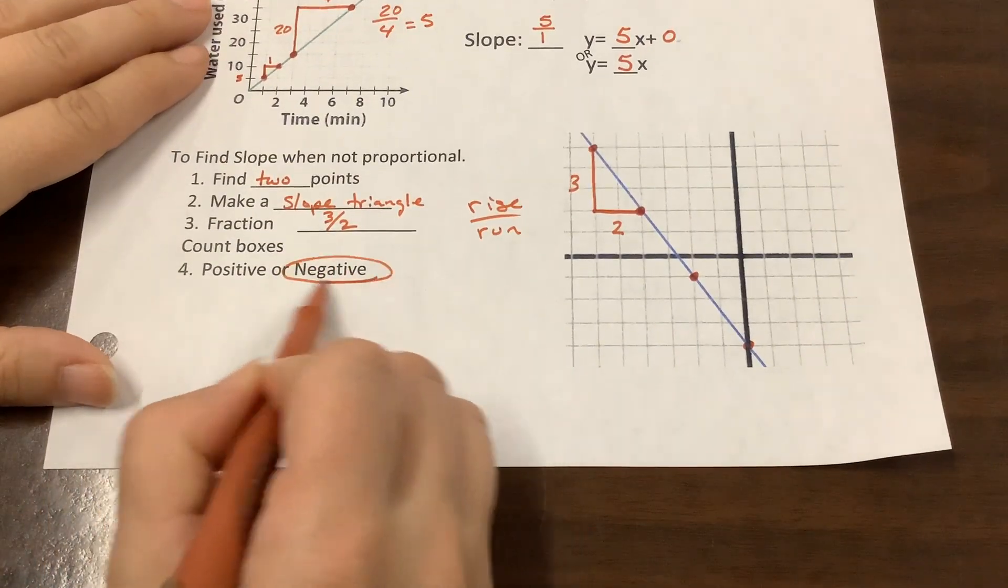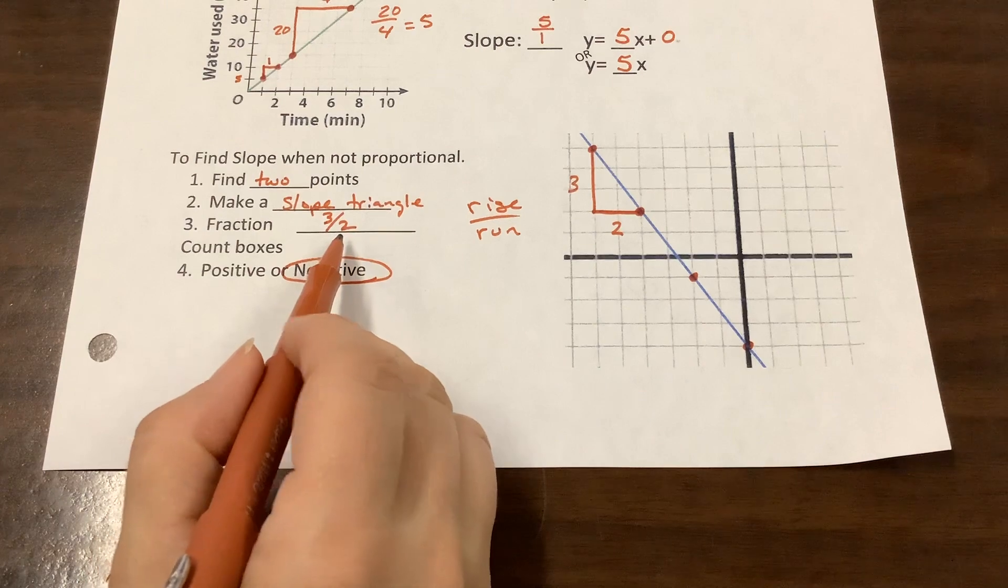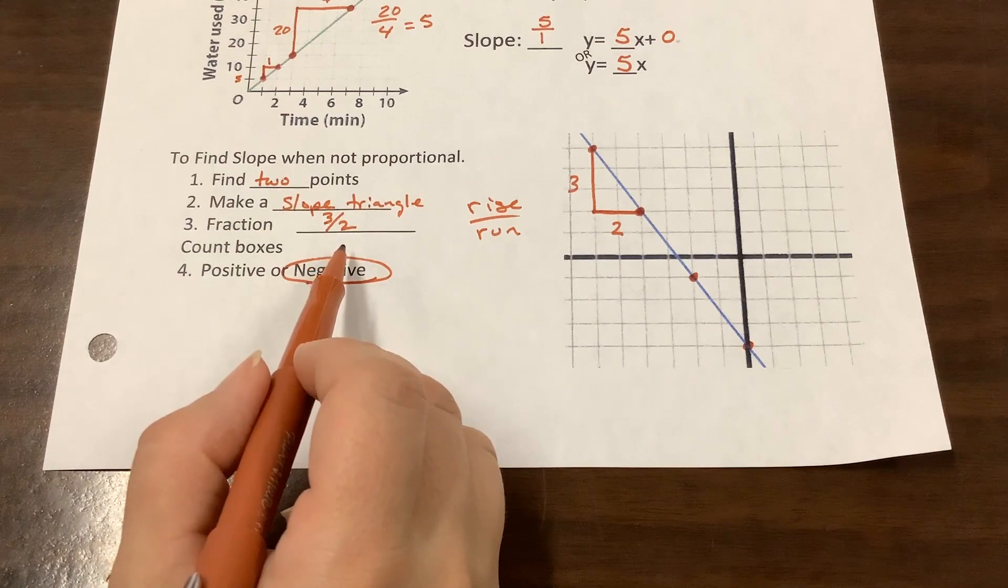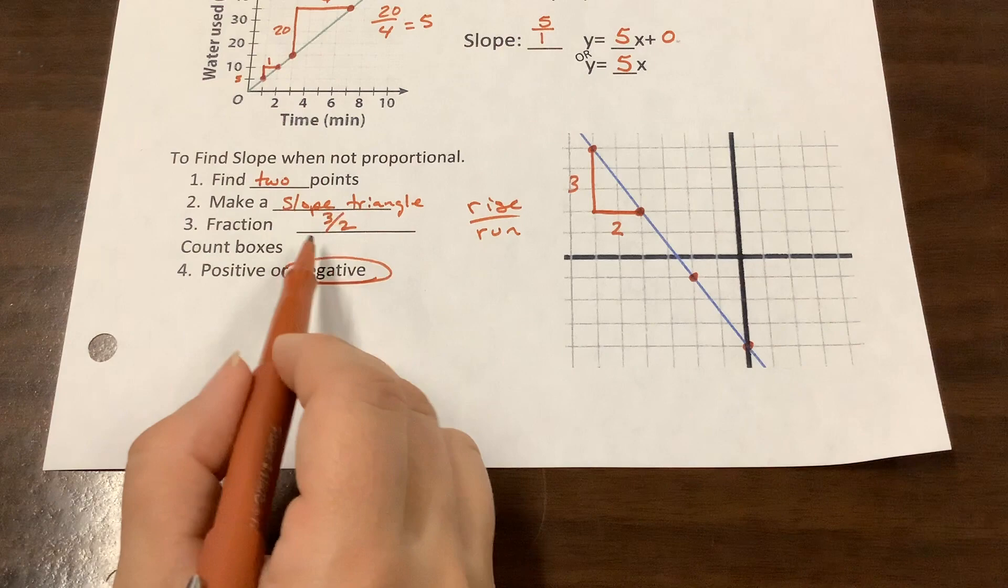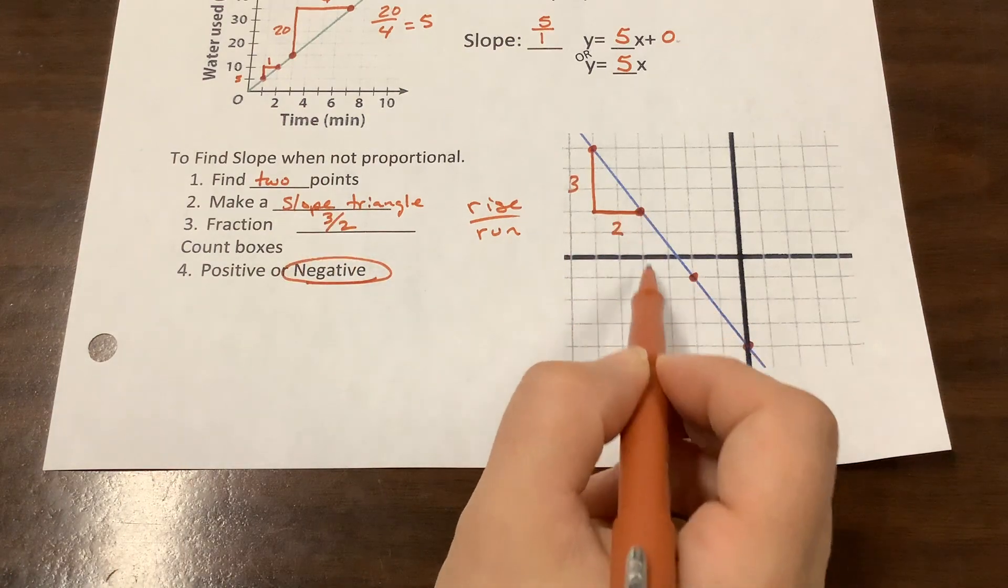And this one we said was negative. So, the slope for this is negative 3 over 2. Now, if we were putting this in the calculator, it would give us 1.5. We like to keep our slope in fraction form because it's describing to us what is happening here with these slope triangles.